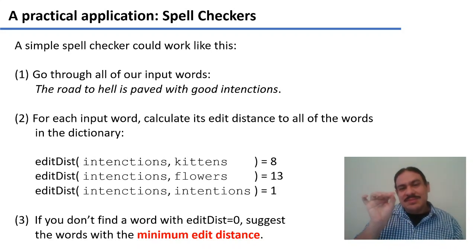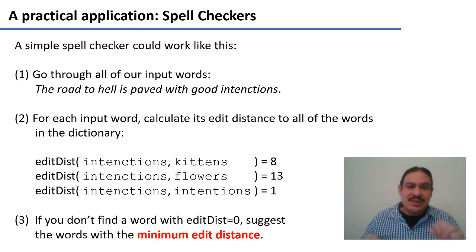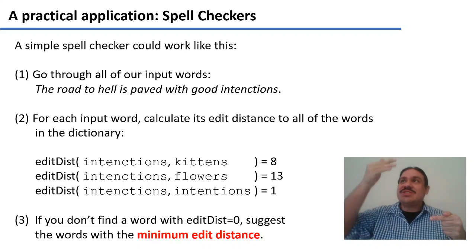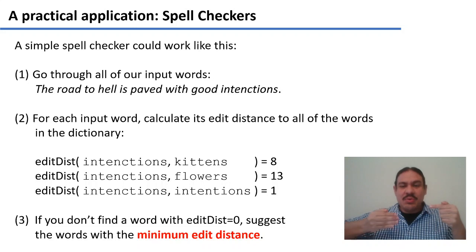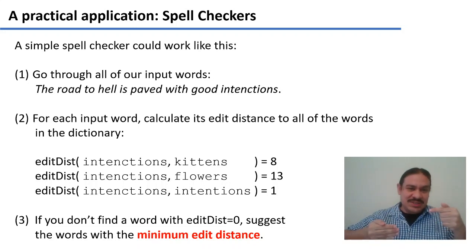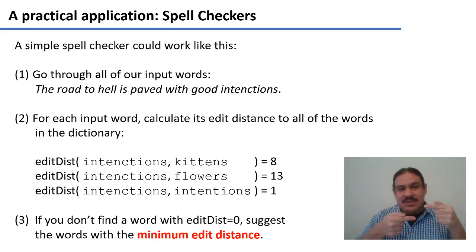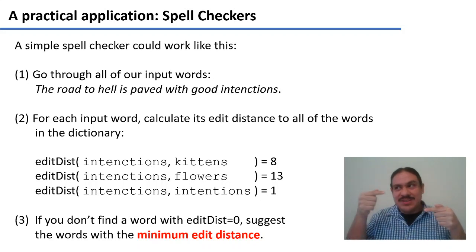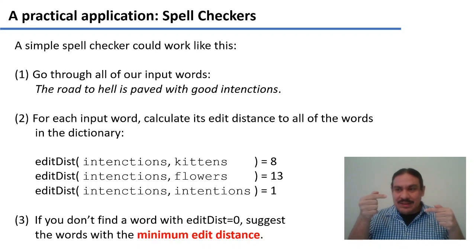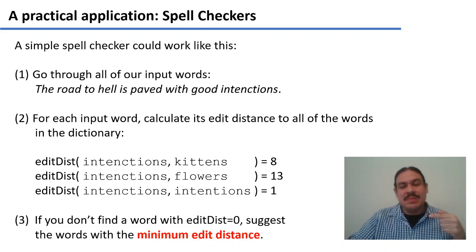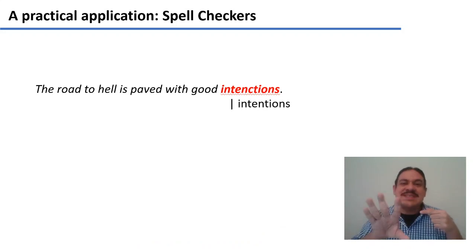When we progress through the sentence and find 'intentions,' it won't be found in the English dictionary. So we calculate which word in the dictionary is closest to 'intentions' according to our edit distance function. For example, transforming 'intentions' into 'kittens' has a cost of eight, into 'flowers' a cost of 13, and into 'intentions' a cost of one. We find the candidate with the minimum edit distance — in this case 'intentions' — and suggest it as a possible correction, so 'intentions' can potentially be replaced with 'intentions.'